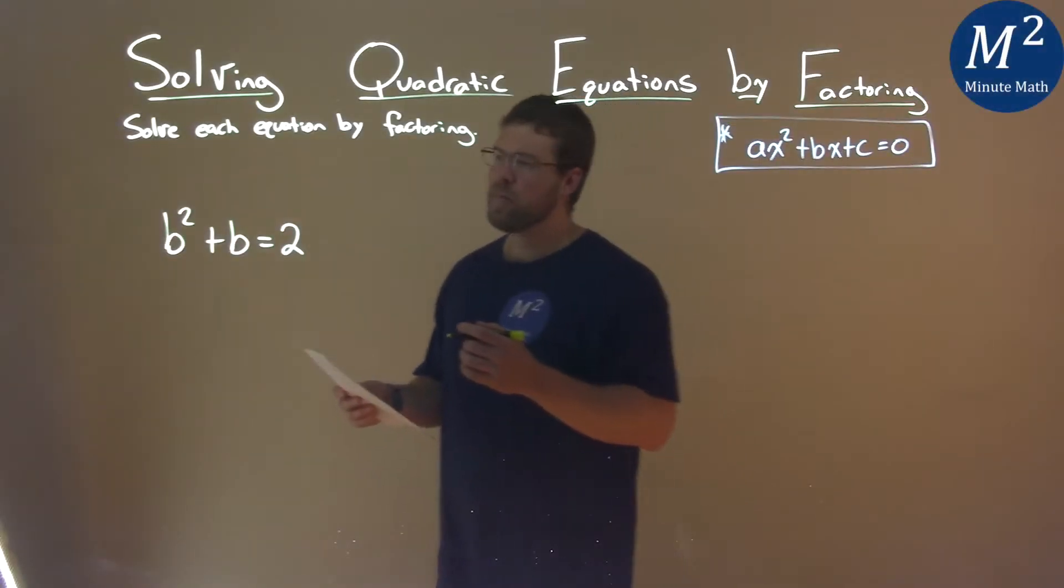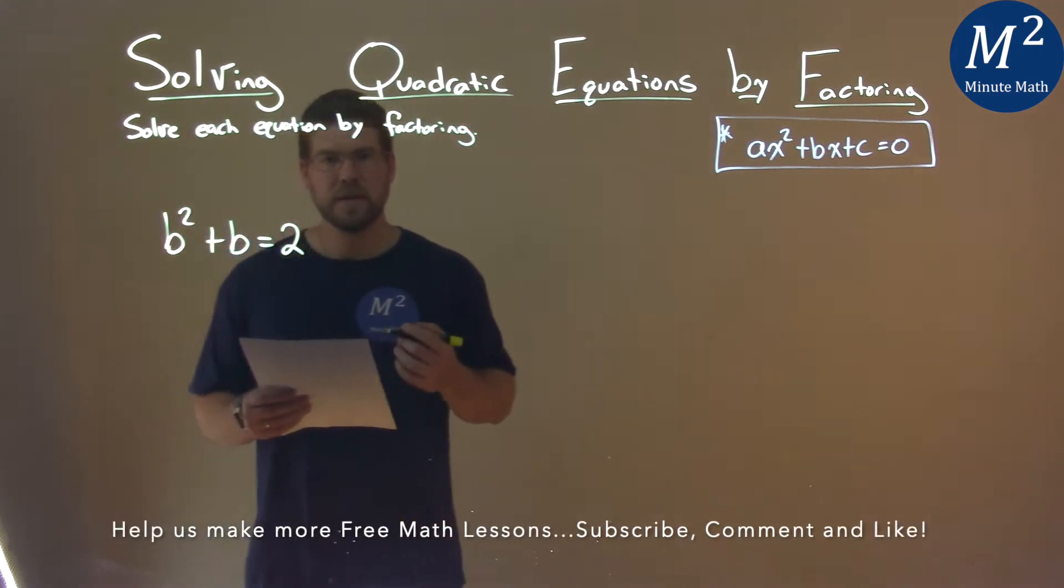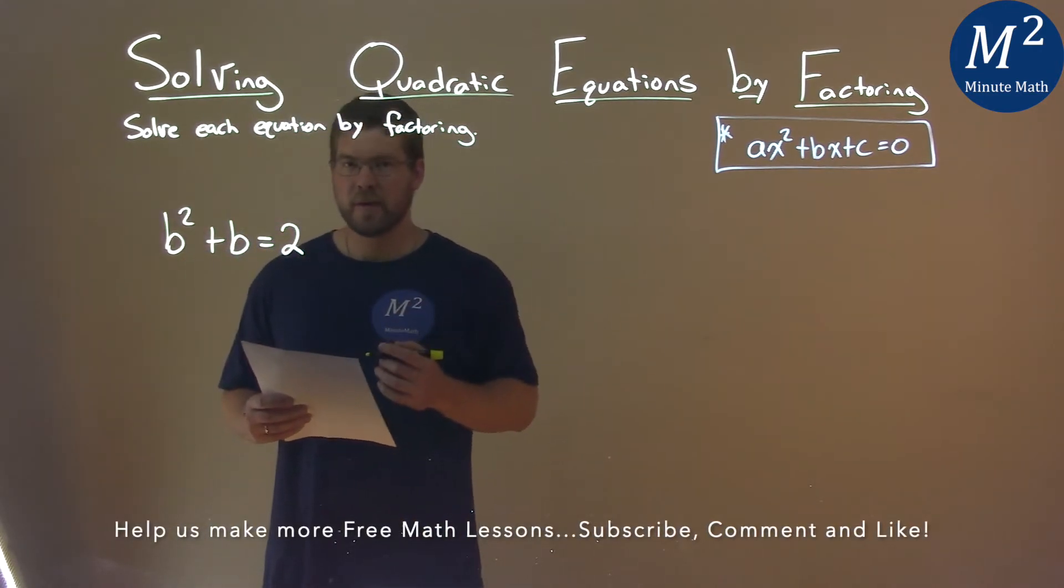We're given this problem right here: b squared plus b equals 2, and we need to solve this by factoring.